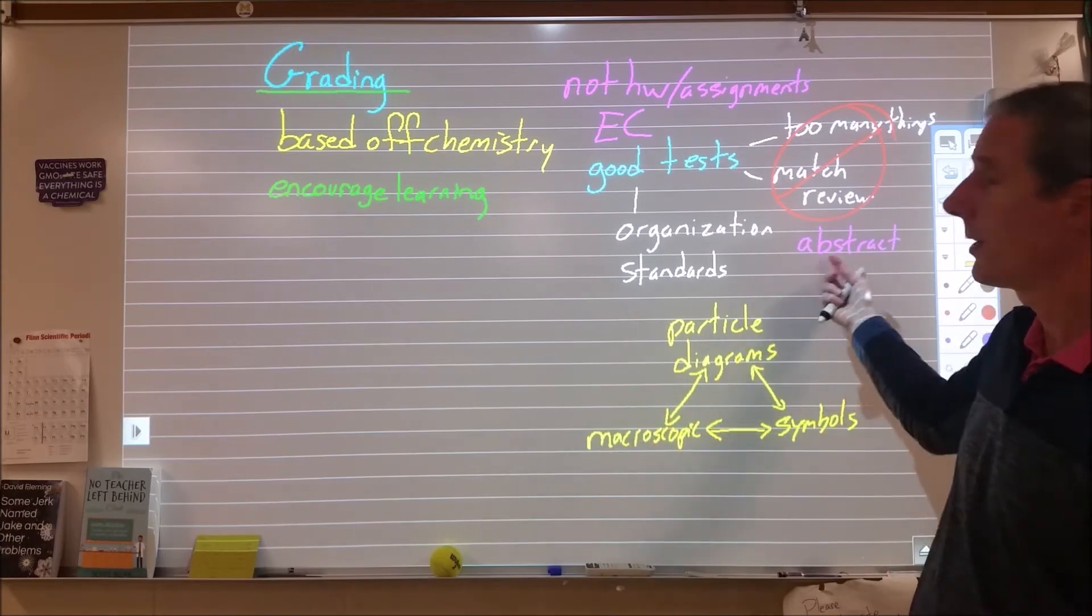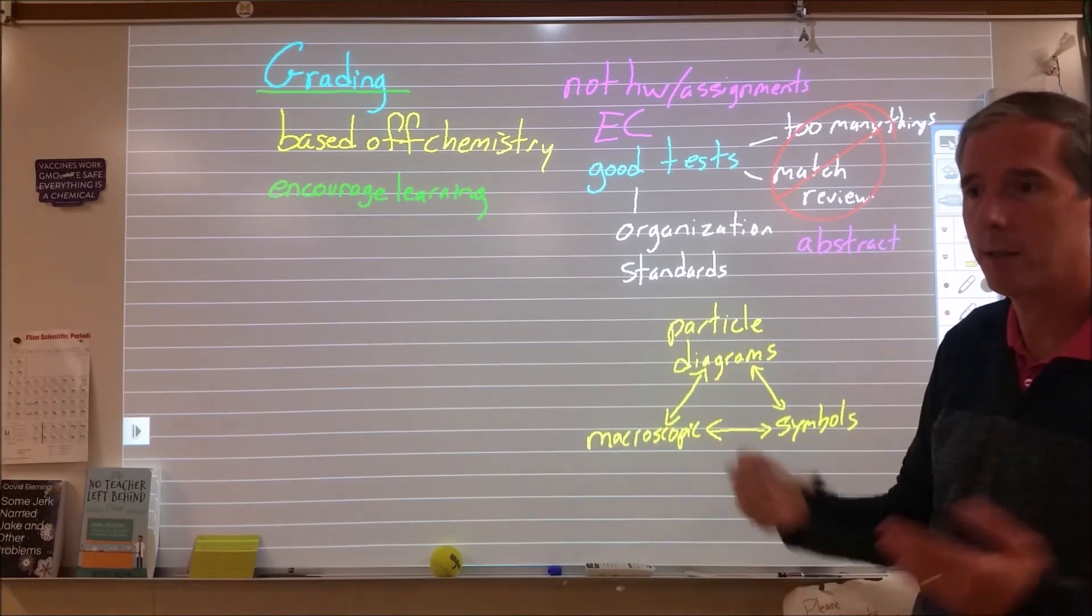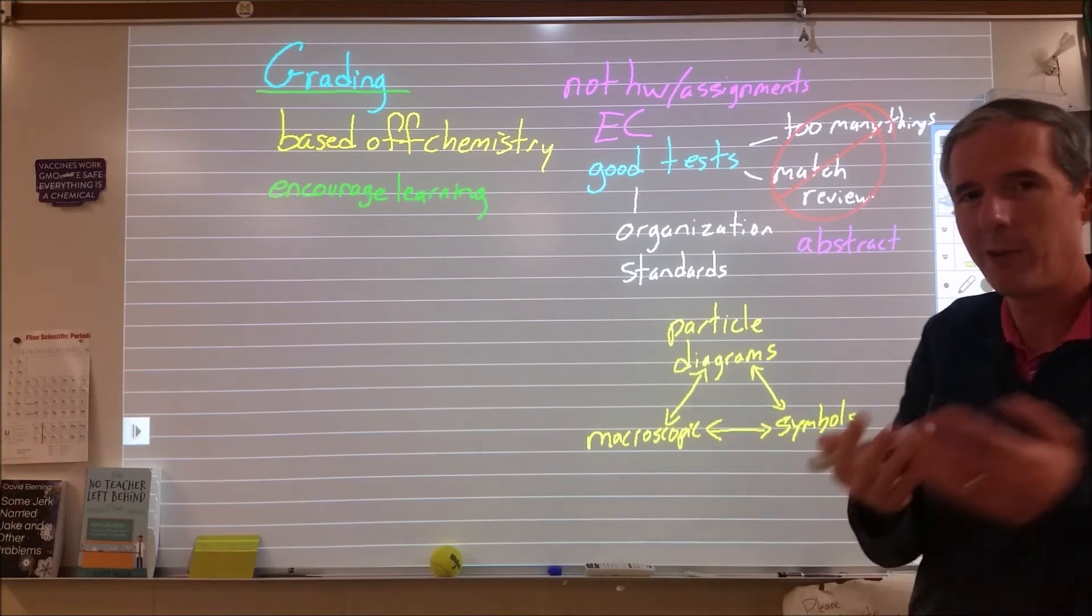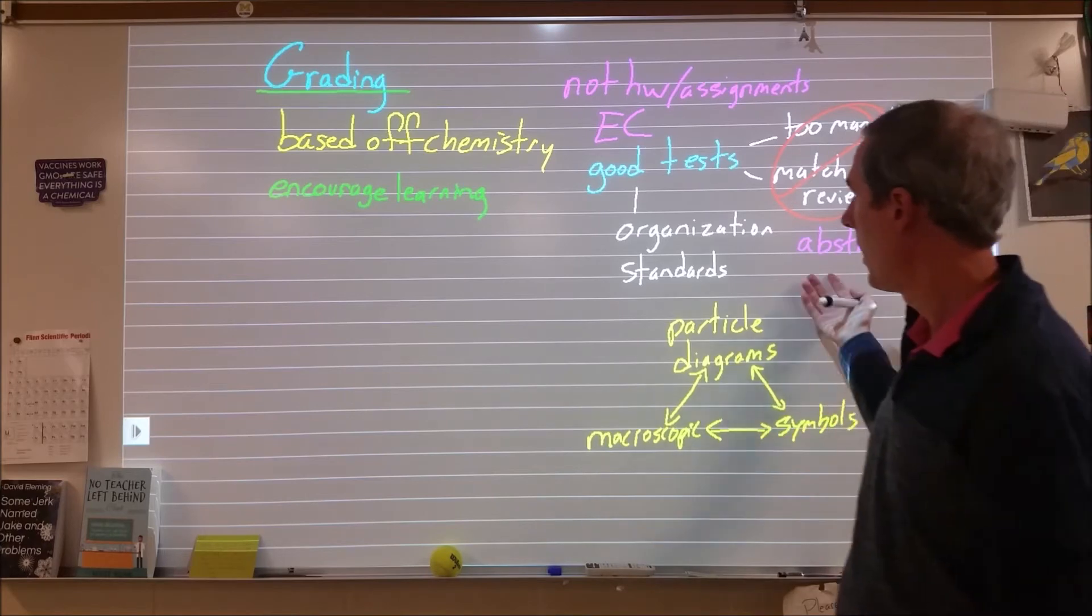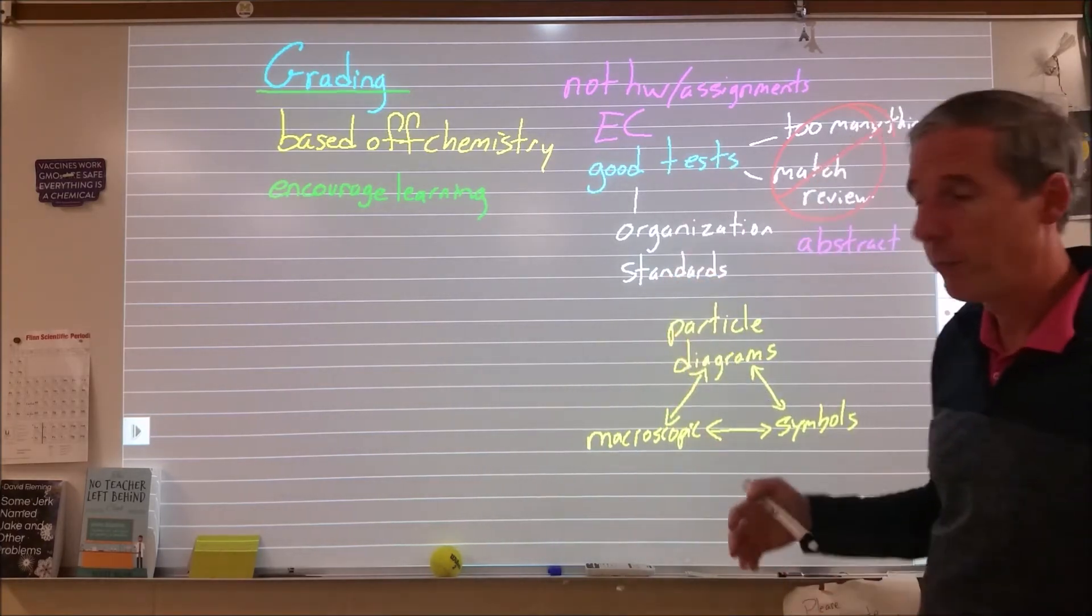By abstract we mean you can mimic what the teacher did, you can mimic the solution manual to this, you can follow the steps, but you really don't know what you're doing. I think a lot of students experience that in their high school chemistry classes where they feel like it's an abstract thing and they know how to do it but they don't know why and they don't know what they're doing. That takes time to develop. But a good test will look at that a little better.